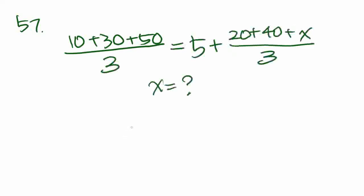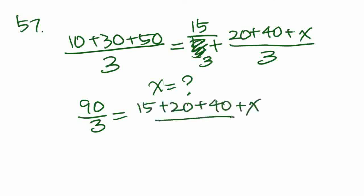Okay, so how do we get started? This 5, I kind of want to get rid of it. So let's multiply it by 3 to get 15 over 3. And then let's add it up. So on the left side, let's add up these numbers. 90 over 3 equals 15 plus 20 plus 40 plus x over 3. This is the same as 60 plus 15 is 75. So it's equal to 75 plus x over 3.